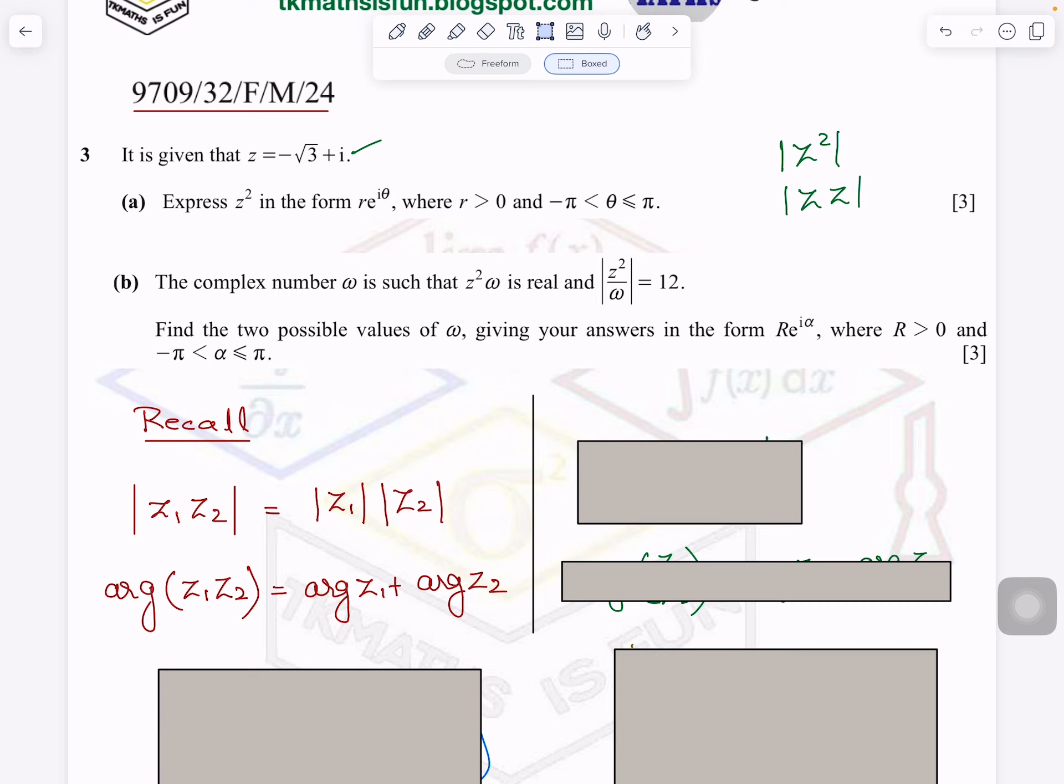Why I am saying this? Because the form R e^(iθ), you know this form, R is the modulus and theta is the angle. So angle you will get from here and modulus you will get from here. So if it is in the quotient form, you can split it like this. You should know these formulas.